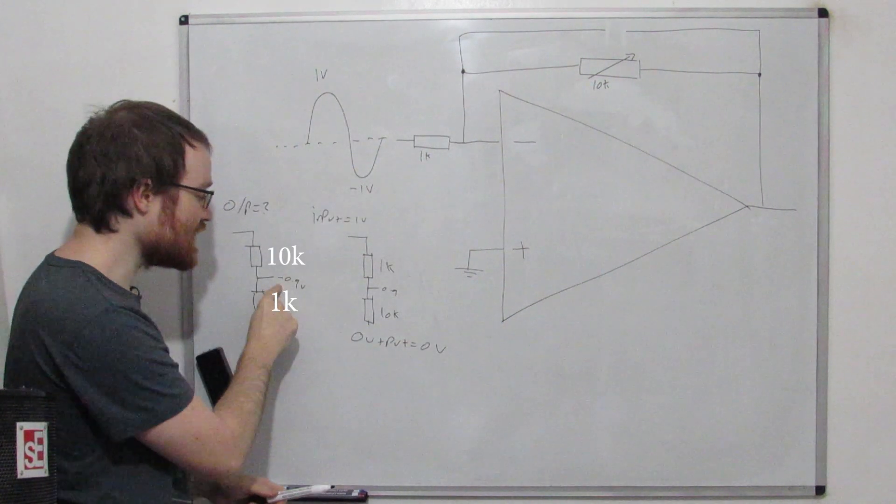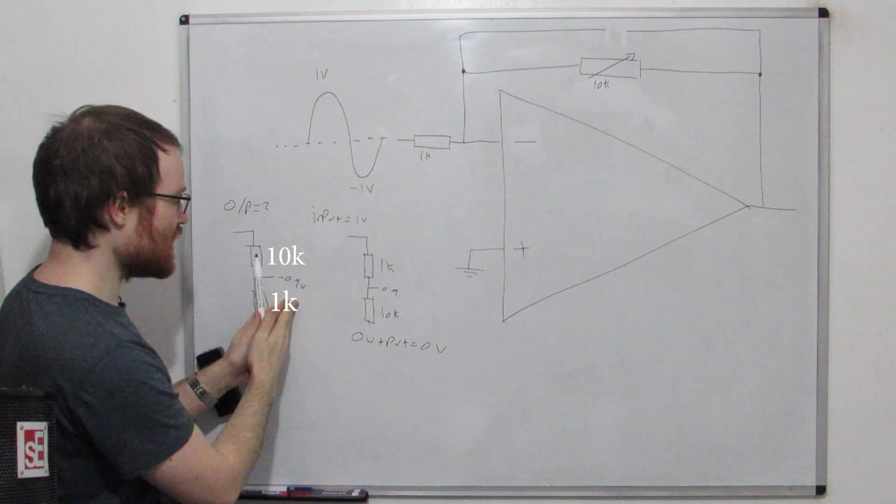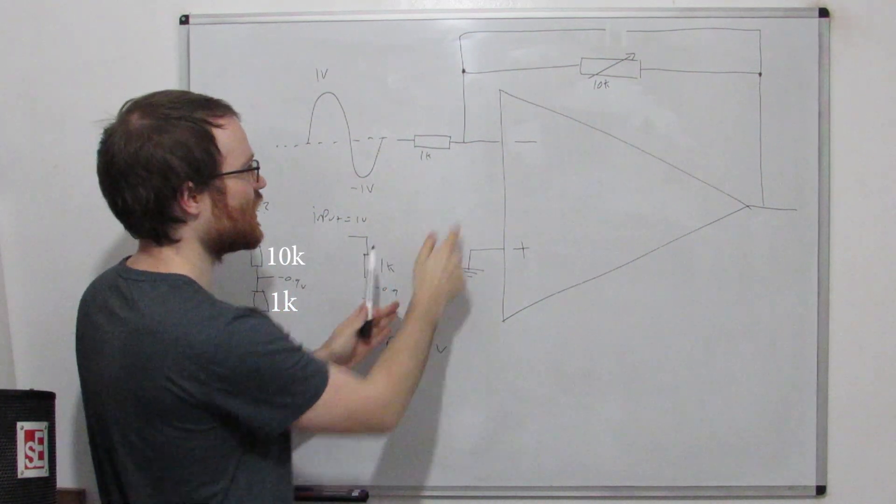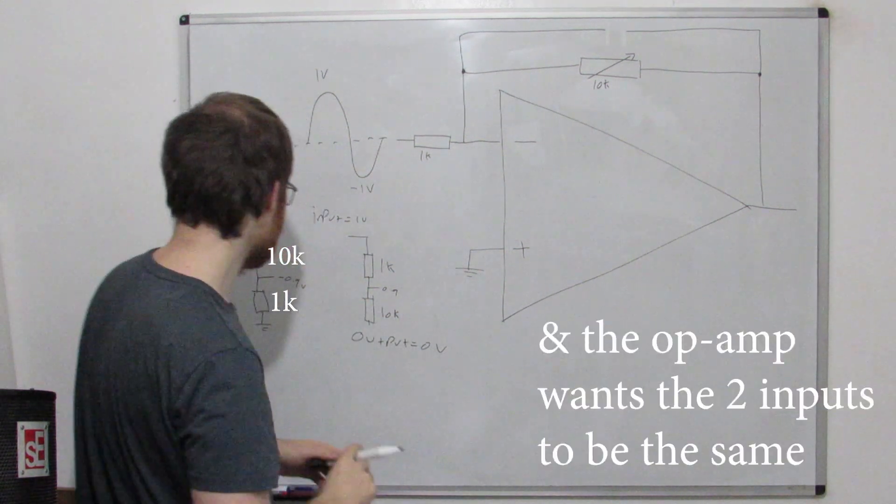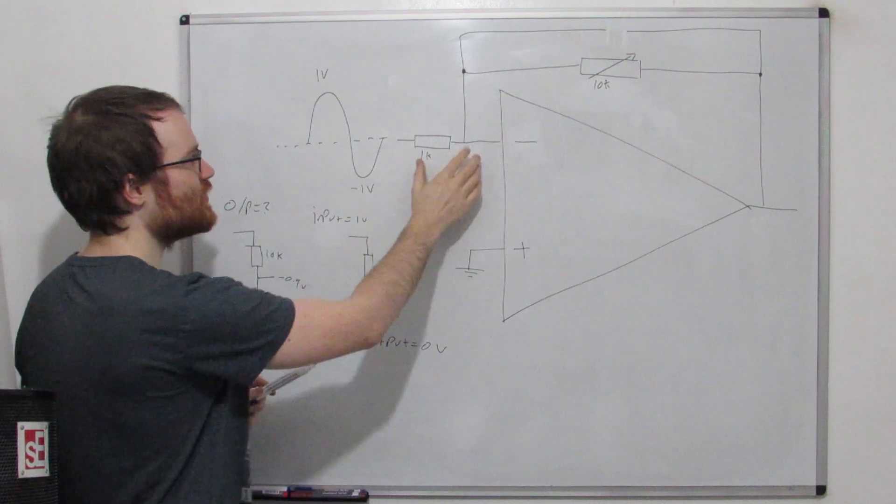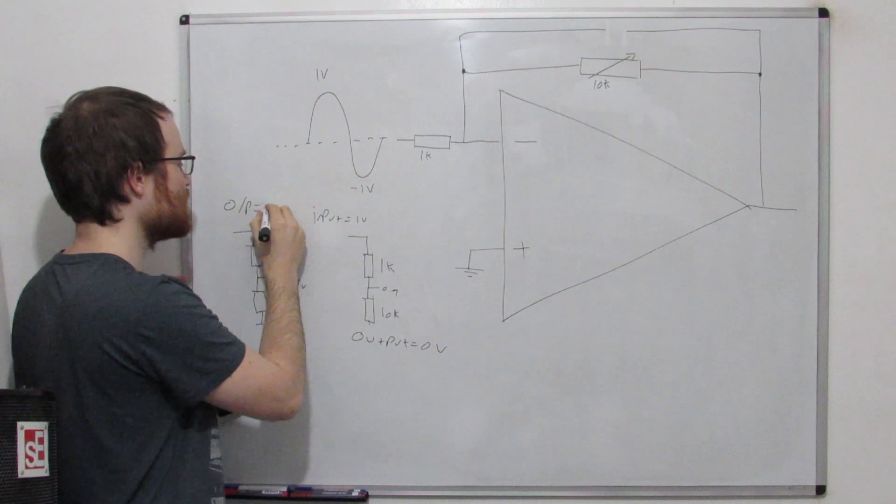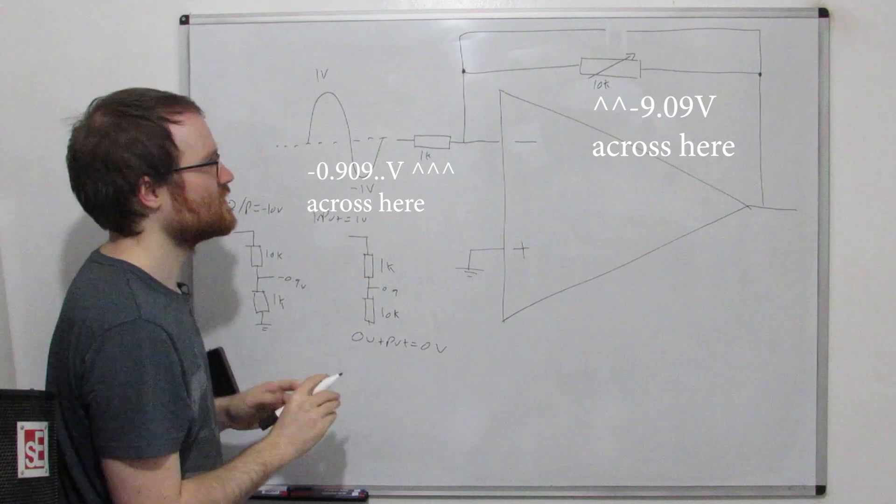because if there's 0.9 volts here, the op-amp wants to kind of oppose that. Okay, so we know we want about minus 0.9 volts at this point, because then minus 0.9 plus 0.9 will make this point zero. So what does the output have to do in order to do that? Then to get about minus 0.9 volts here,